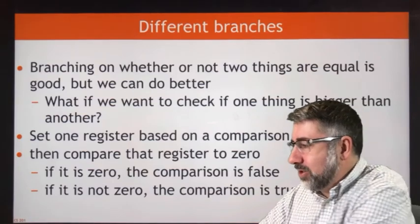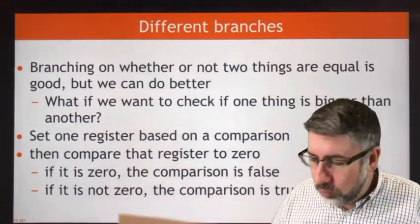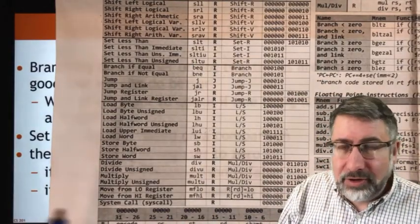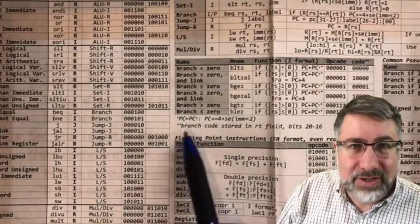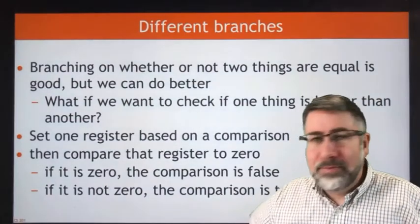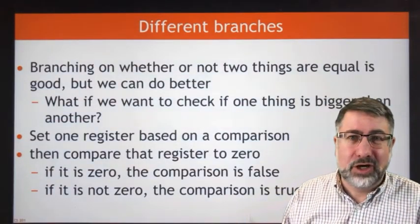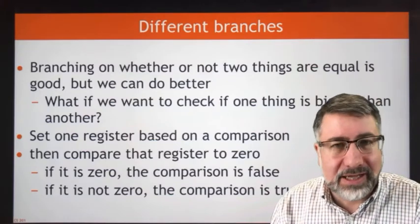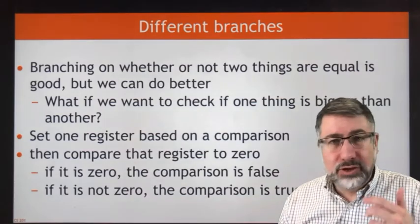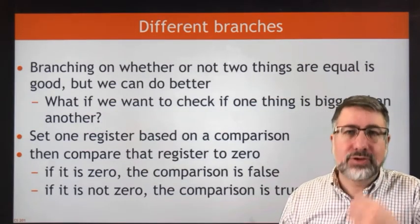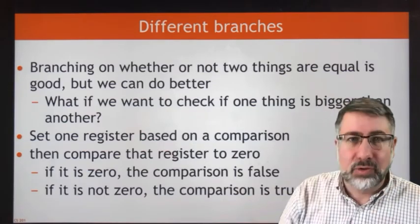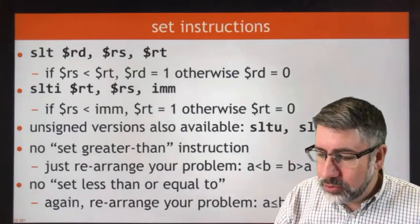MIPS allows you to branch on equality and non-equality — those are the two standard branches available. There are also some branches that allow us to compare to zero, which are a little bit more involved, but they exist as regular instructions. But if you want to branch on comparing two numbers — if you want to branch on five is less than ten or something like that — then you need a larger control structure. You use one of the set instructions to set a register to one or zero based on the comparison, and then you can branch on that register.